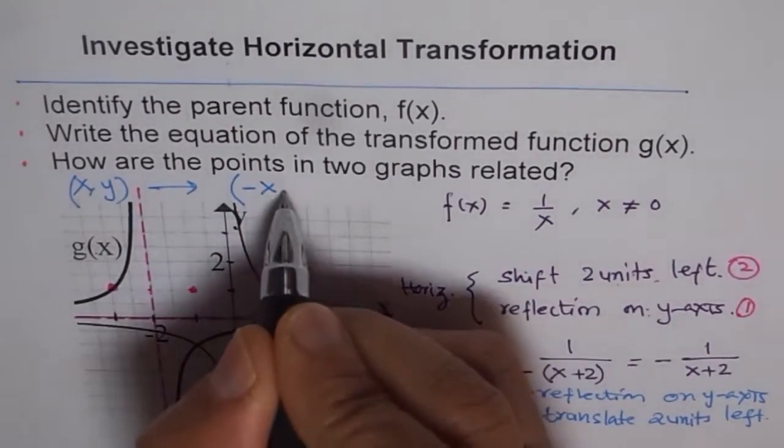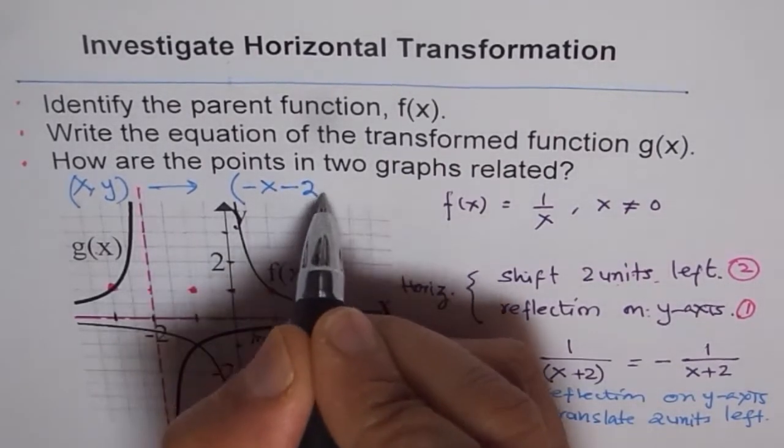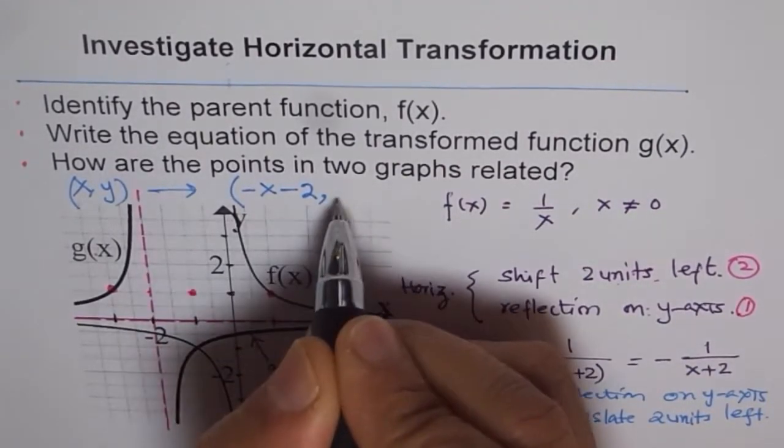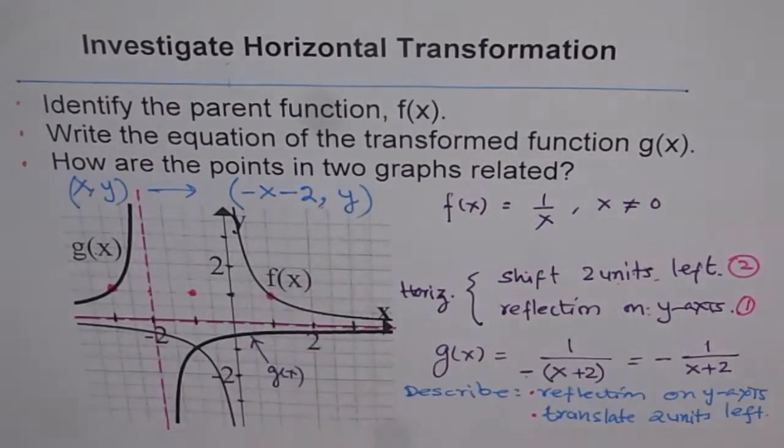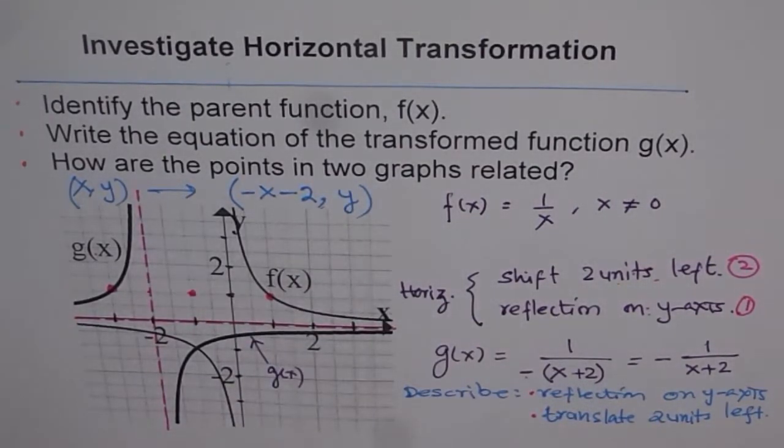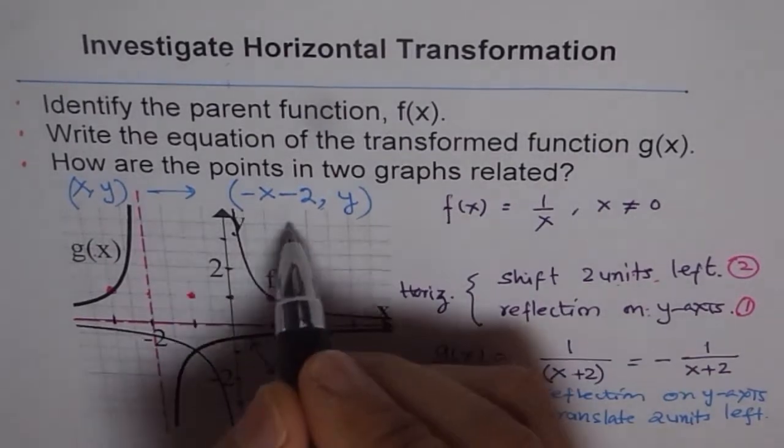So it will be minus of x and then minus of two. That is how you get x points and y points will remain same. So that is how each point in the two graphs is related, right?